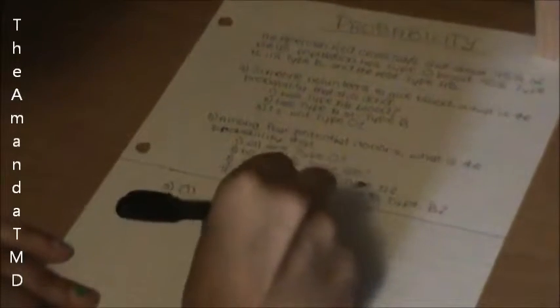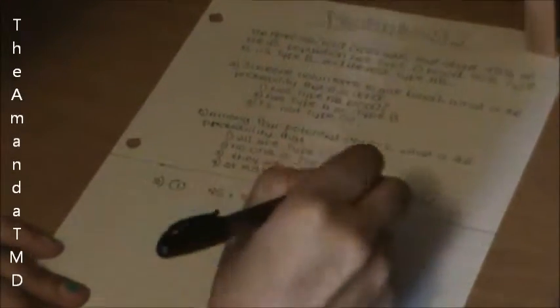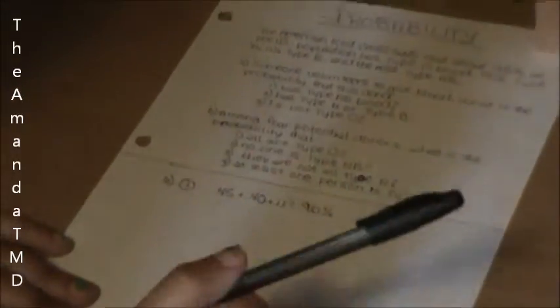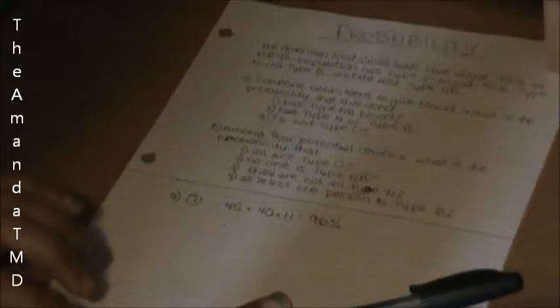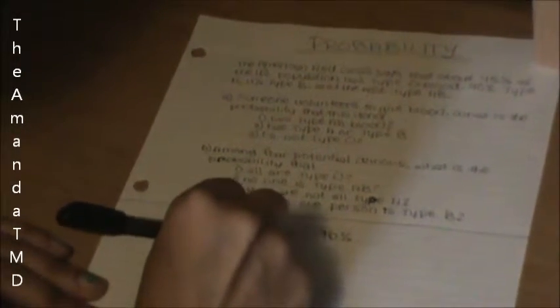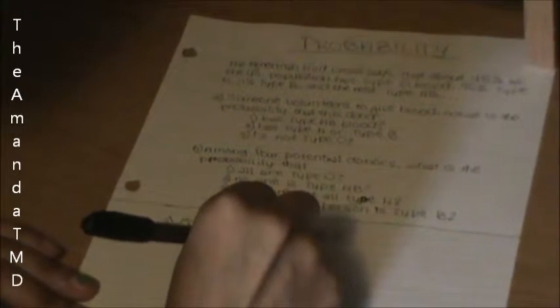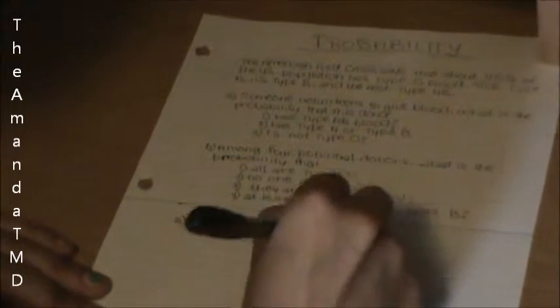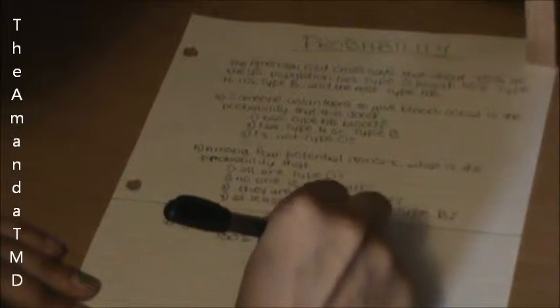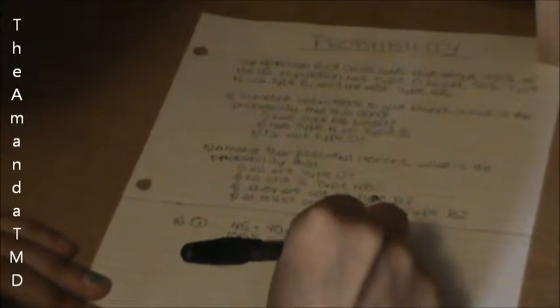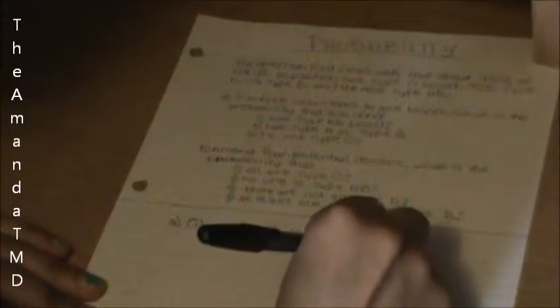Now that you know how much percentage is everything else, to find out how many have type AB blood, you just do 100% minus 96%, which gives you 4% of your donors are type AB blood.